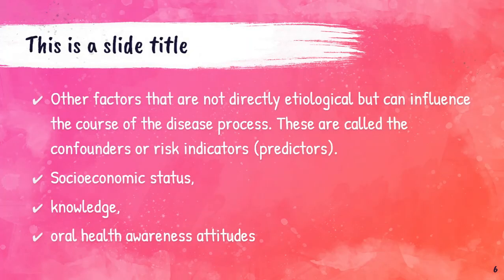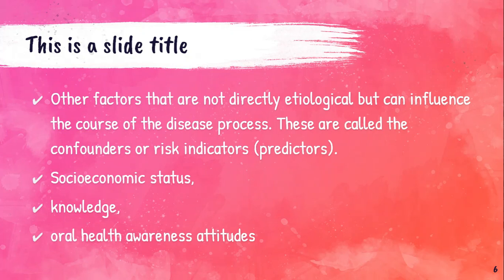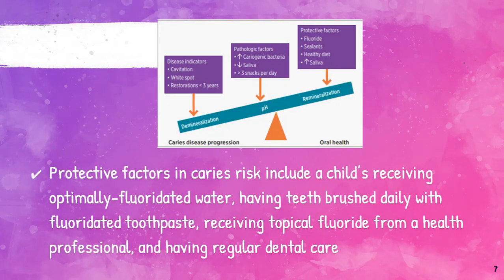Factors that do not directly cause caries but influence the course of disease progression are called confounders or risk indicators. They are: socio-economic status, knowledge, awareness, and attitudes of the individual towards caries disease progression. Protective factors include general oral health care procedures, frequency of visiting a dental care provider, fluoride in water intake, and frequency of brushing with fluoridated toothpaste.